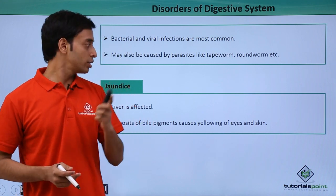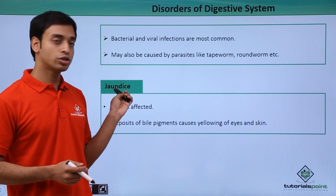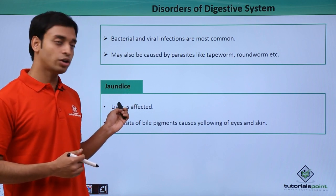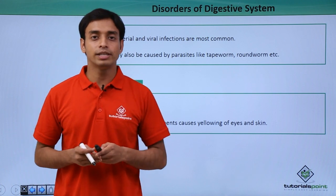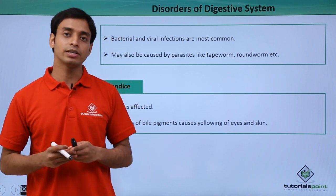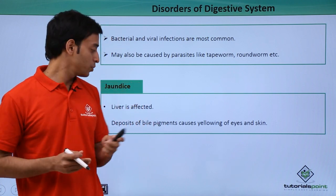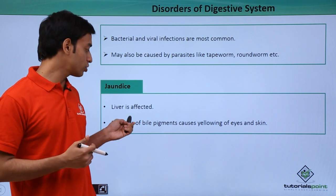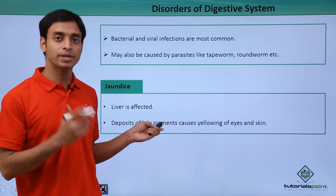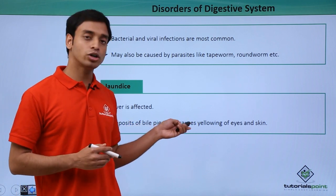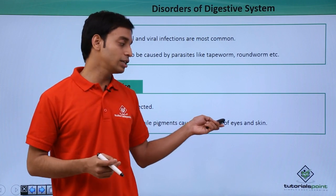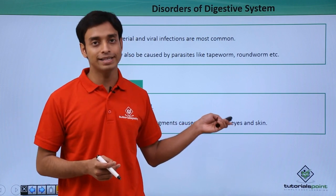The first type is a very common disorder known as jaundice. In jaundice, the liver is affected very badly. This happens because of the deposits of bile pigment, specifically bilirubin, and because of these deposits it causes the yellowing of the eyes and the skin.